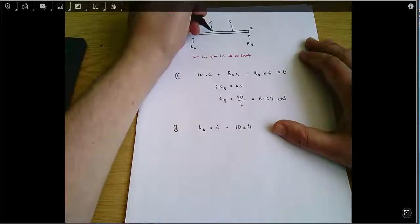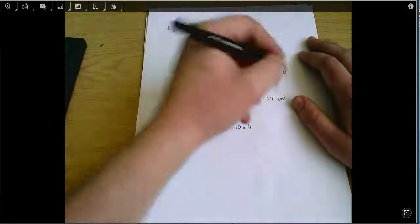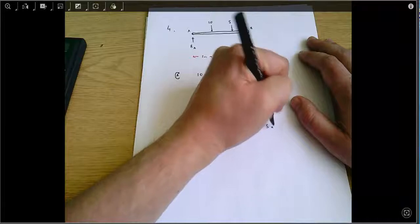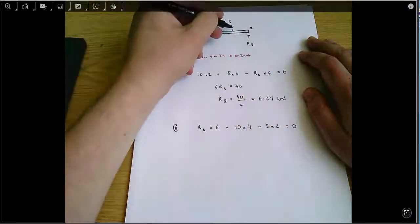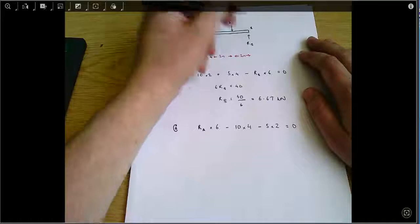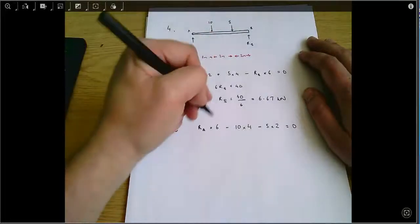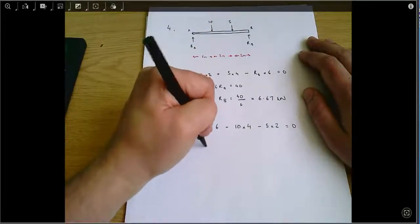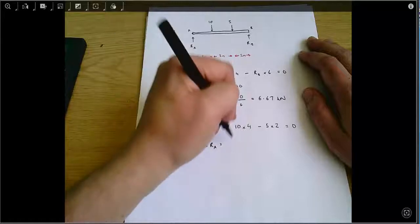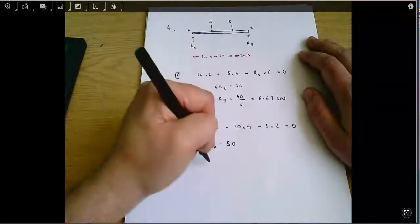This is creating an anti-clockwise moment and it's 4 metres away. Minus 5 times 2 equals zero—the 5 times the 2 metres from the pivot at B. And all of that gives me that 6RA equals 50.